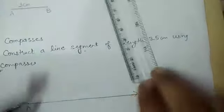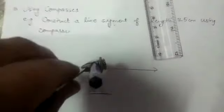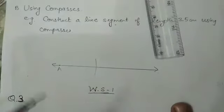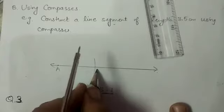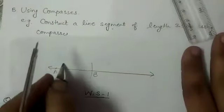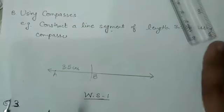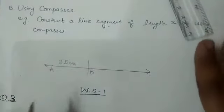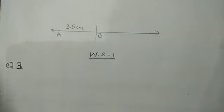Now we have opened our compass up to 3.5. Now keep it like this and mark your arc. Name this point as B. We can give any name to our line segment as per our requirement, as we wish, if we are not given. Now we have a segment of 3.5 centimeter.